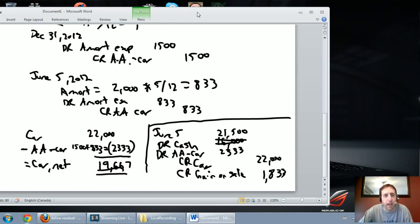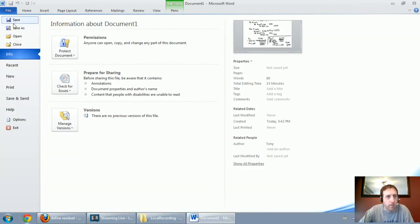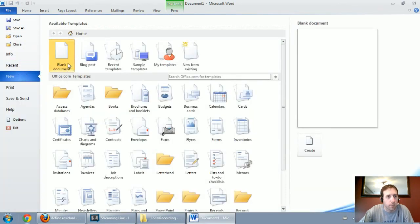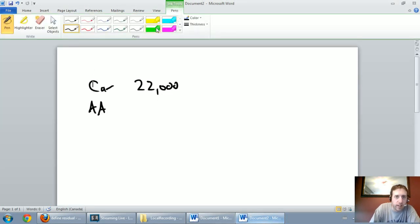Let's have a look at the other scenario. Everything's the same in the other scenario up until that last entry. Again, we have a car and accumulated amortization on our car. Our car is worth $22,000. The accumulated amortization on the car so far was $2,333. Everything's the same up until that sale journal entry.